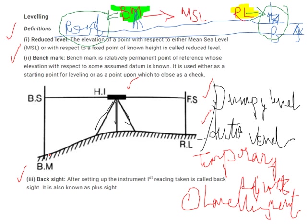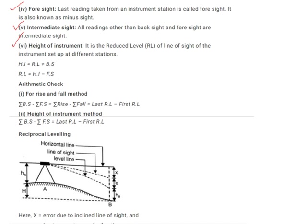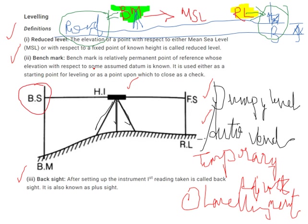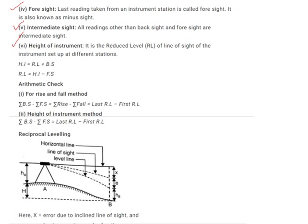Then we have backsight — the first reading which you take on a benchmark is called a backsight. The last reading, no matter how many intermediate sights you have, is called a foresight. The height of instrument is the reduced level of the line of sight. If I can tell the level of my line of sight, that is called the height of instrument, and it can be calculated using the standard formula.